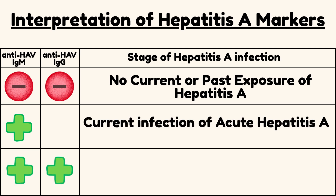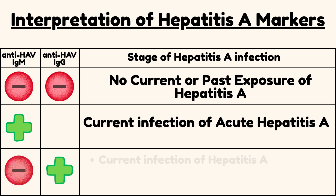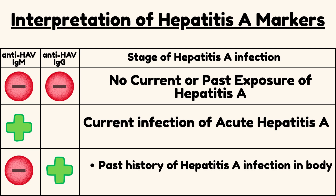If both IgM and IgG are positive, it still suggests a current infection of Hepatitis A. If only IgG is positive, it means the person either had a past history of Hepatitis A infection, or was vaccinated against Hepatitis A.